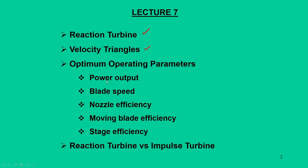These operating parameters are the power developed by the turbine — the power output — the blade speed, what is the optimum blade speed the turbine should operate. Then we need to find out nozzle efficiency, moving blade efficiency, and stage efficiency. These quantifications are required for reaction turbines. Towards the end of the lecture, we will summarize the two types of turbines discussed so far: impulse turbines, which we discussed in previous lectures, and reaction turbines. Let us start with reaction turbines.